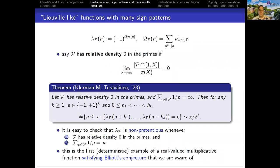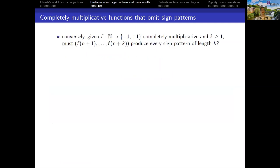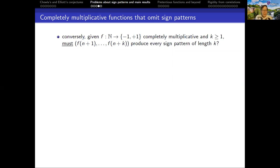I say deterministic because it was proven by Klurman, Shkredov, and Zhao that if you look at so-called random multiplicative functions, they do satisfy Elliott's conjecture with high probability. Now, I just mentioned an example of a function that does hit all of the sign patterns with the right frequency, but we could ask on the flip side: maybe the Liouville function doesn't hit all the sign patterns — is that possible? Or must any plus-minus-one-valued completely multiplicative function produce every sign pattern of length k?